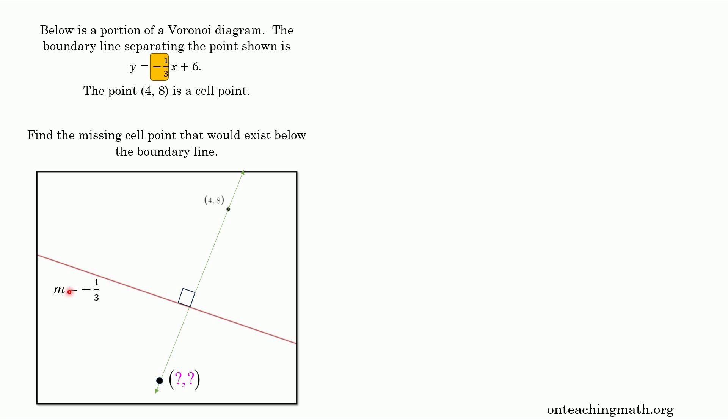All right. Now, since they're perpendicular, I know the slope of this line is negative one third. The slope for the line connecting our two points, the one we know and the one we need, is going to be three.